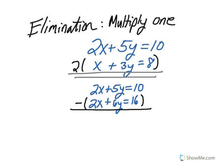When we do that, 2x minus 2x is 0. 5y minus 6y is 1y, and 10 minus 16 is negative 6. Excuse me, that's negative. So we have negative y equals negative 6.